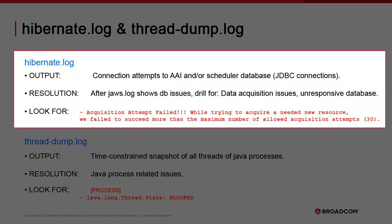Hibernate.log can help with database connectivity issues. JAWS.log will help you troubleshoot DB connections. However, you may notice connectivity fluctuations — the connection might be established but drops at random because of a variety of root causes. Hibernate.log shows connection attempts for both the AAI database and the schedulers. If you're trying to troubleshoot erratic behaviors in data acquisition cycles, or discrepancies between AAI and the schedulers' data, Hibernate.log will prove useful.